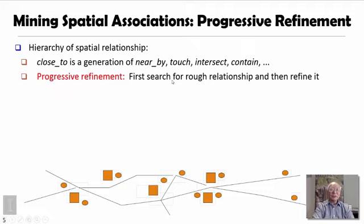That means we first search for rough relationships and then refine to study more refined relationships. The general philosophy is if the rough relationship is not frequent, there's no need to study the very refined one because they are not frequent as well.